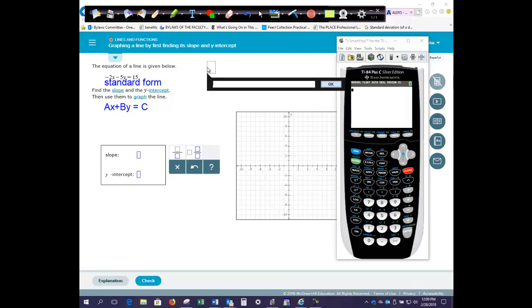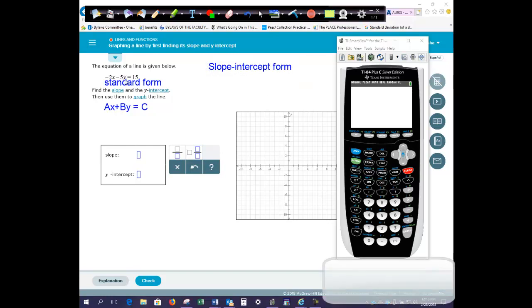And what we need to do is to write this equation in slope-intercept form so that we can identify the slope that you need and the y-intercept that you need. So we need to be able to solve this equation for y.